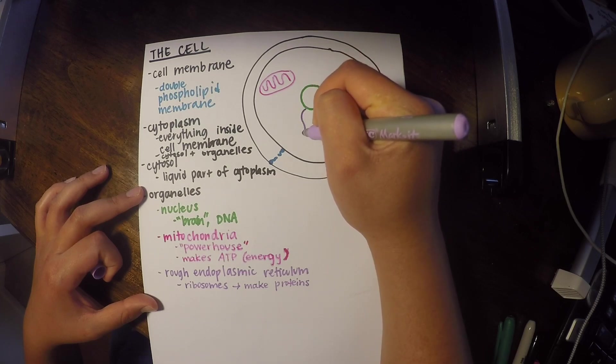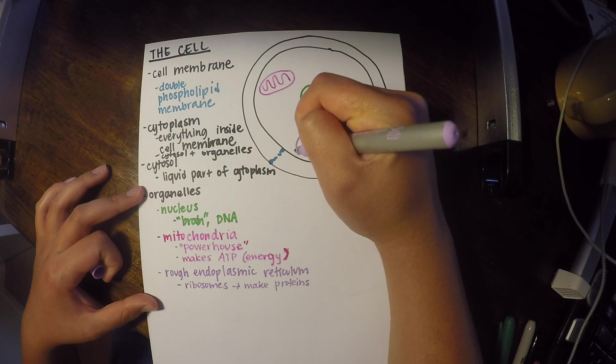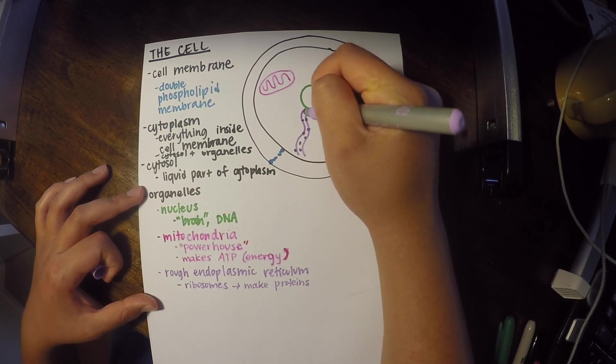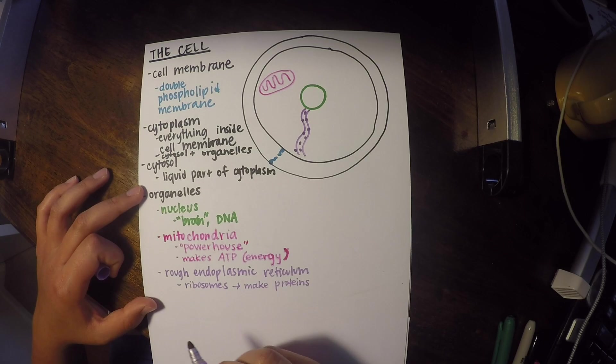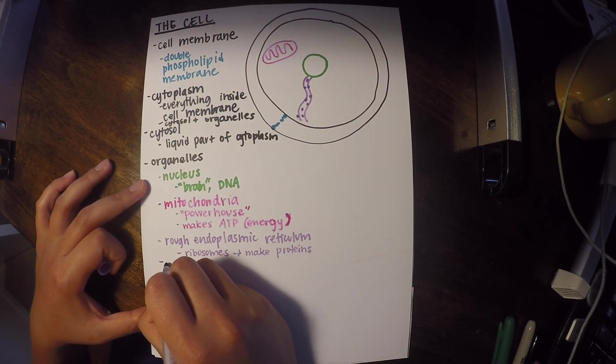So I'm going to draw our rough endoplasmic reticulum here. And on the outside, I'm just going to put little dots that are our ribosomes. And that's how we know that it's our rough endoplasmic reticulum. But don't forget, we also have our smooth endoplasmic reticulum.